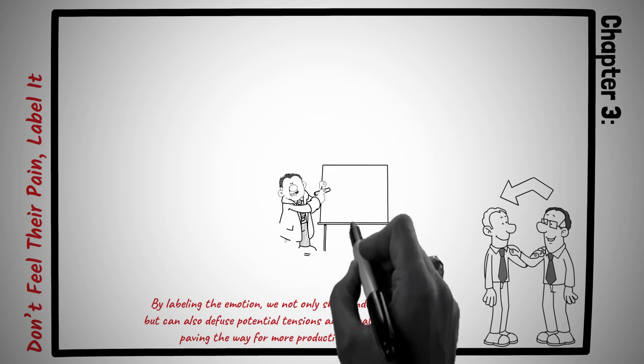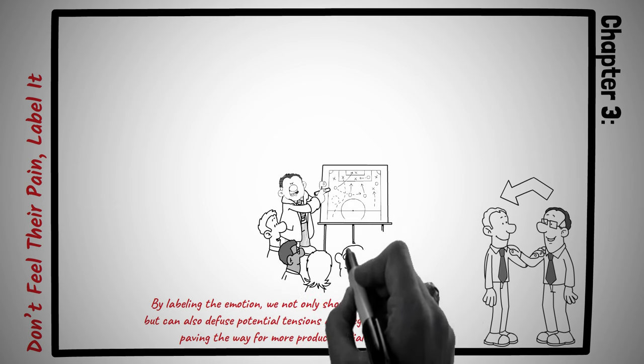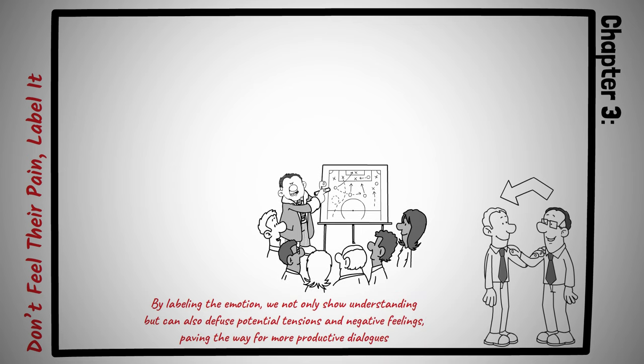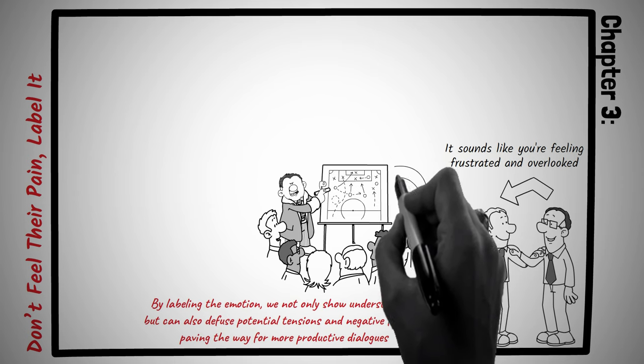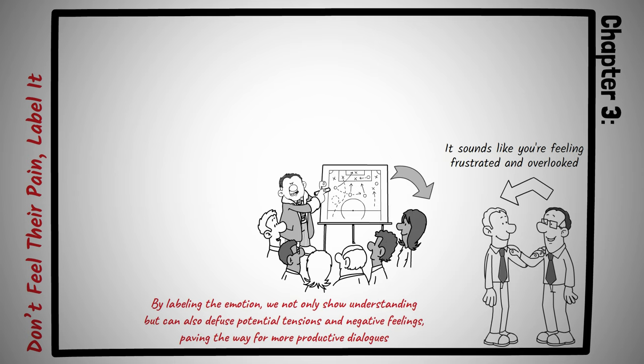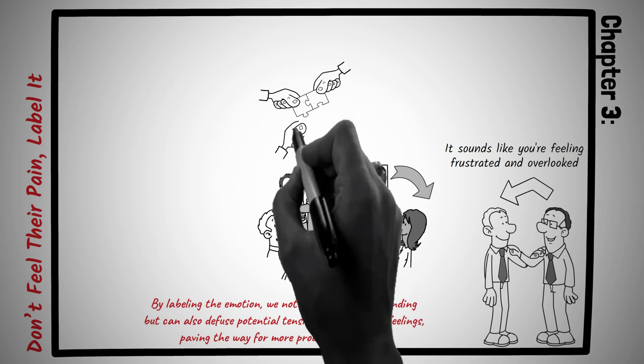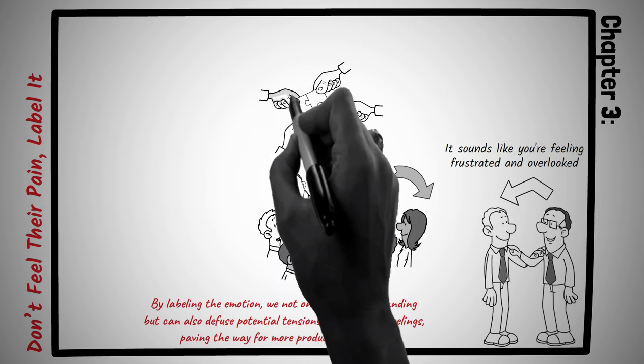Imagine David, a manager in a multinational firm, was confronted by an irate employee, Karen, who felt she was consistently overlooked for promotions. Instead of getting defensive or lost in the whirlwind of Karen's strong emotions, David calmly responded, it sounds like you're feeling frustrated and overlooked. By labeling her emotions, he immediately saw a change in Karen's demeanor. Her stance softened as she realized her feelings were acknowledged. This simple act of recognition allowed the subsequent conversation to shift from confrontation to collaboration, discussing tangible steps for Karen's career development.